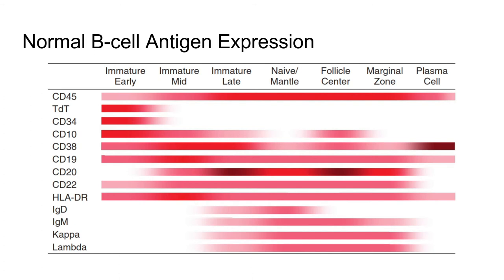CD10, also known as common ALL antigen, is an early B cell marker found on hematogones and follicular B cells. CD19 and CD20 are important B cell markers, as is HLA-DR, an antigen-presenting peptide. CD38 is a nonspecific marker expressed on all B cells and in higher levels on plasma cells. Plasma cells will also express CD138. Mature B cells will express either kappa or lambda light chains, not both.